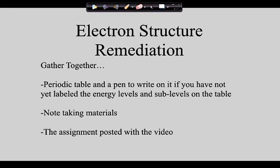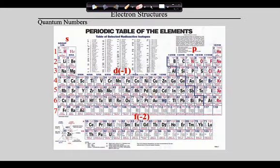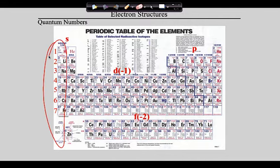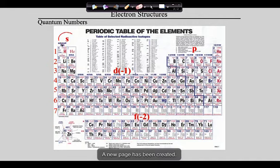We're going to help you step through labeling your periodic table. Grab your periodic tables and a pen or pencil. You'll notice in red that we've already labeled the periodic table just as we did in class. Down the left-hand side you need to label the energy levels, which range from one to seven.